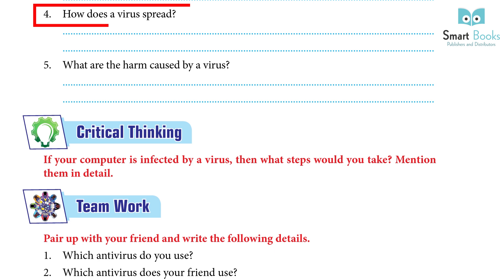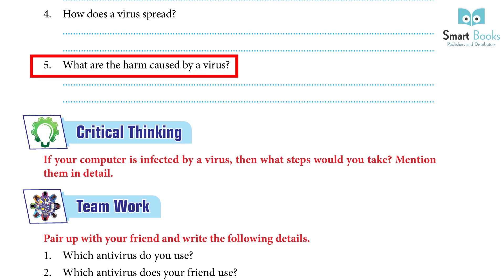4. How does a virus spread? Computer viruses are frequently transmitted by attachments in emails or instant message conversations, as well as through portable storage devices like pen drives when connected to the computer. When you download anything from the internet, viruses can be concealed as attachments of amusing photos, greeting cards, or audio and video files. 5. What are the harms caused by a virus? A computer virus might corrupt or delete data on your computer; it can even erase everything on your hard disk; it can cause your email program to spread itself to other computers; and viruses can harm the computer by destroying files and finally crashing the system.